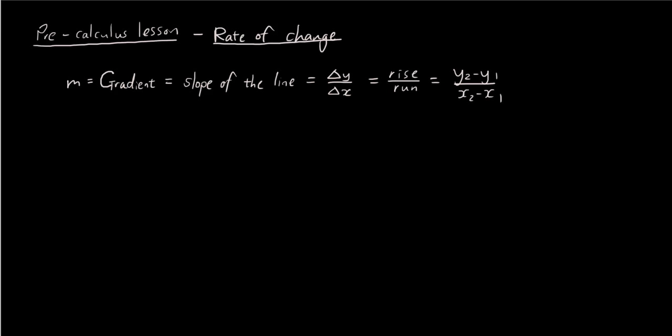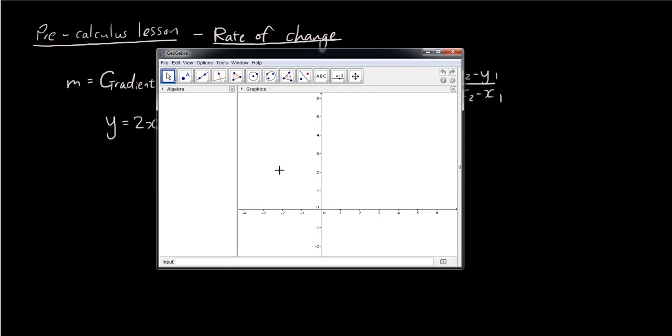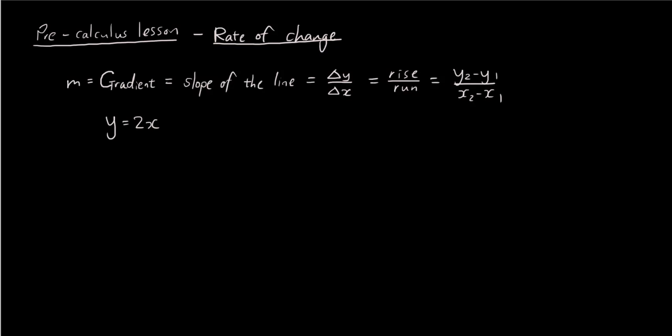So, let's start with a simple straight line equation such as y equals 2x. And if you draw this equation in GeoGebra, so I'm just going to plot the graph y equals 2x, you get a straight line. And you'll see that the whole line has the same slope. So, this line here has a constant slope.